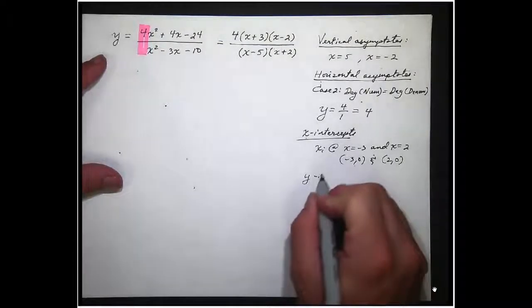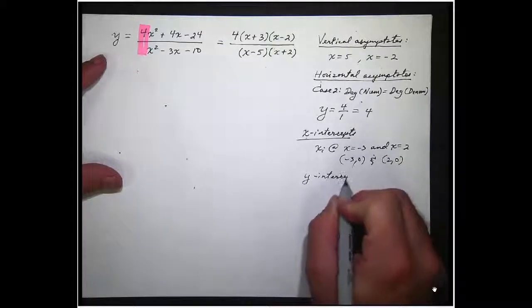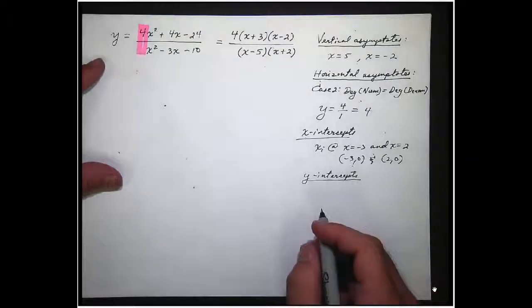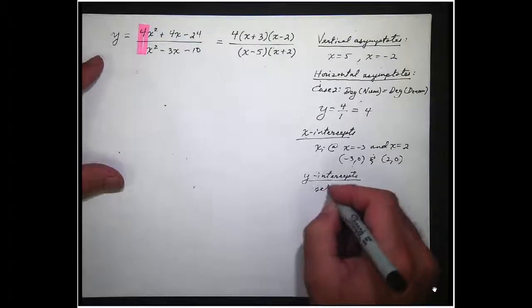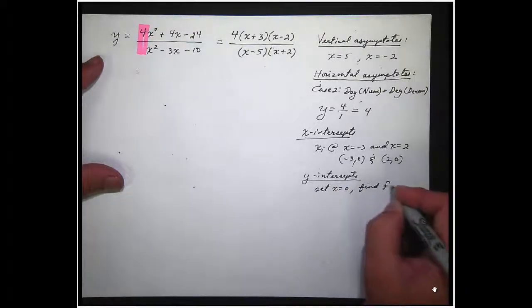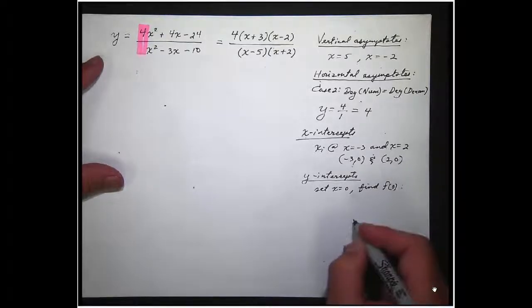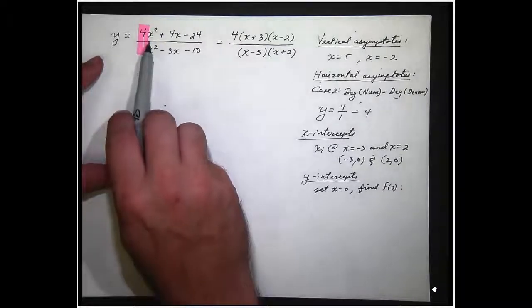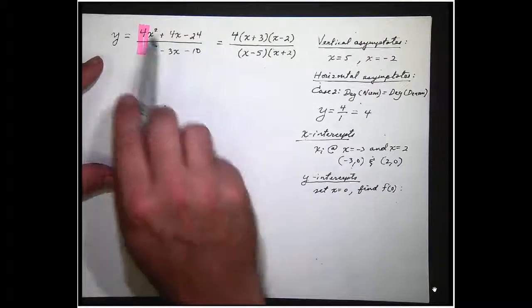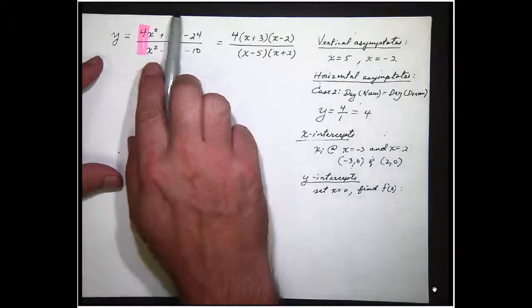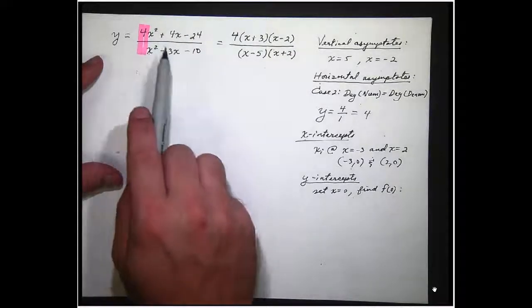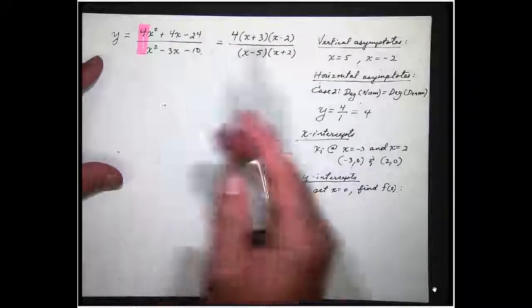The y-intercepts, I apologize for my penmanship there. How do we find a y-intercept? We set x equal to 0 or find f of 0. Same thing, right? If you plug in a 0 here and a 0 there, you can't plug in one there. You plug in one there and one there, you can't plug in one there. This term and that term will be gone. This term and this term will be gone. You'll have 0 plus 0 minus 24 over 0 minus 0 minus 10. You'll have negative 24 over negative 10.